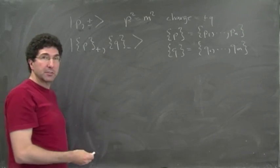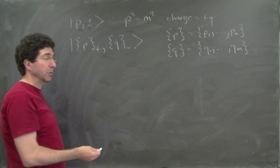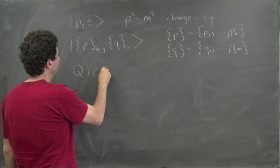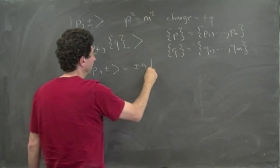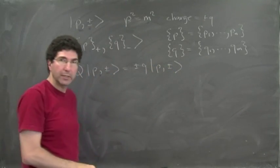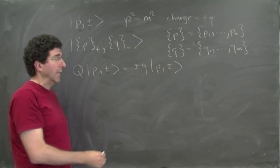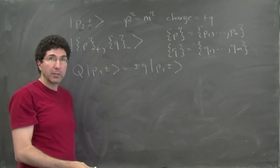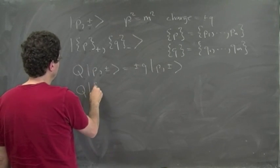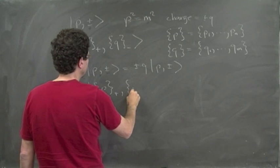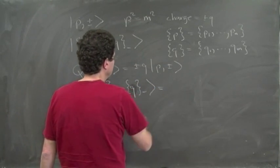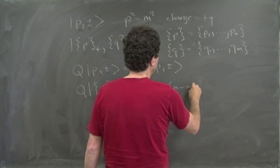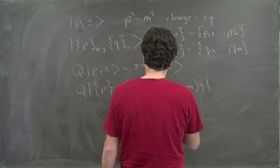This is our space of states. On this space it's natural to define a charge operator, which tells us the total charge. On one-particle states, the charge operator returns plus or minus q times the state. On the most general state, we want the charge operator to add up the charges of all particles. So Q acting on state |p+, q-⟩ gives (n minus m) times q times the state back, where n is the number of positive charges and m the number of negative charges.